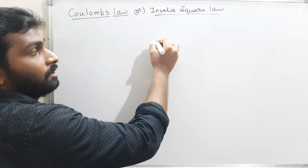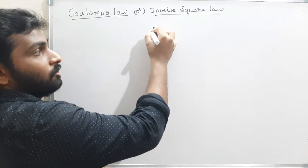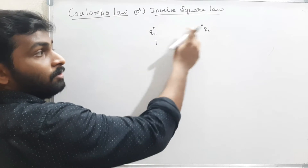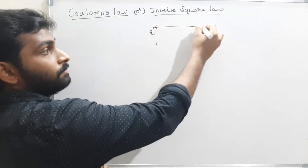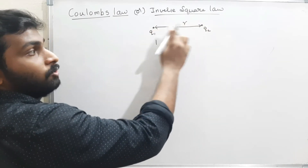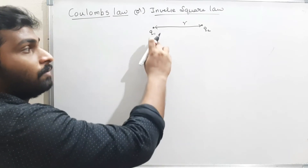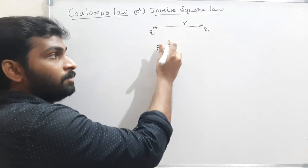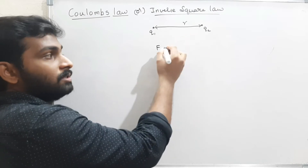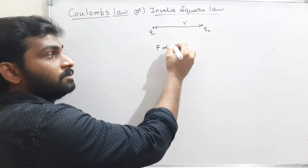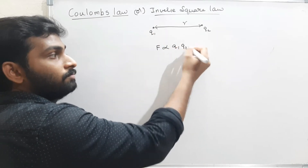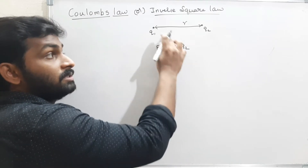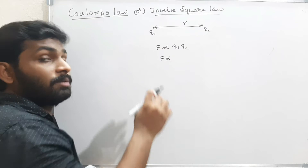We have charge Q1 and another charge Q2, and the distance between Q1 and Q2 is R. The magnitude of force between the two charges is directly proportional to the product of the charges — Q1 into Q2 — and inversely proportional to the square of the distance between them.